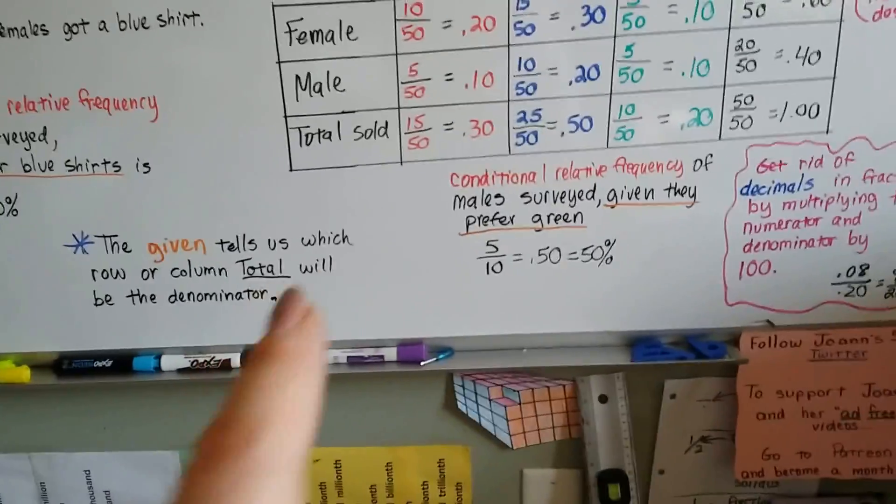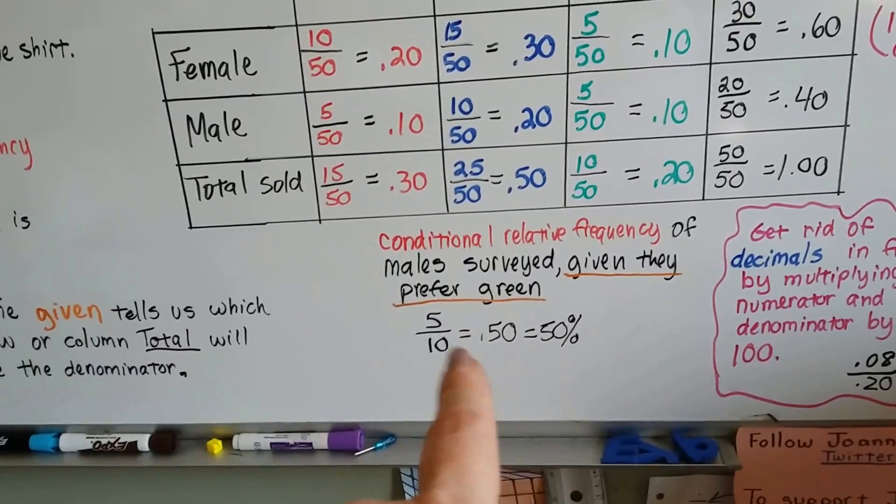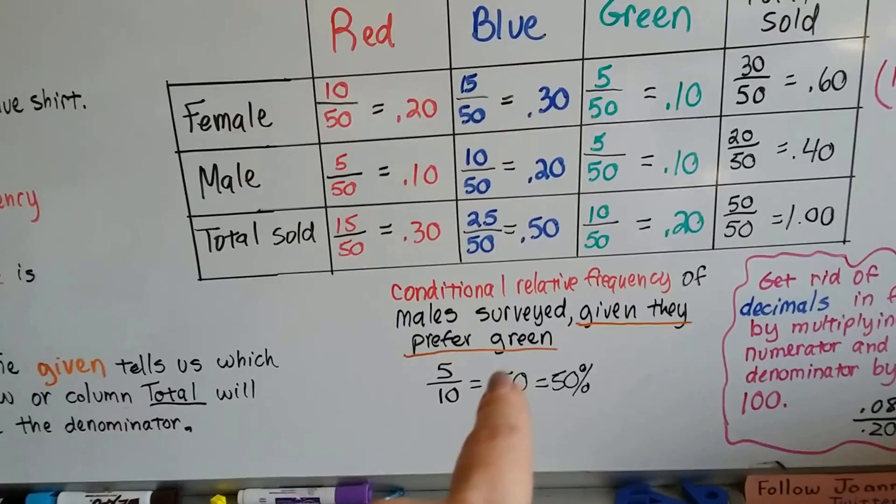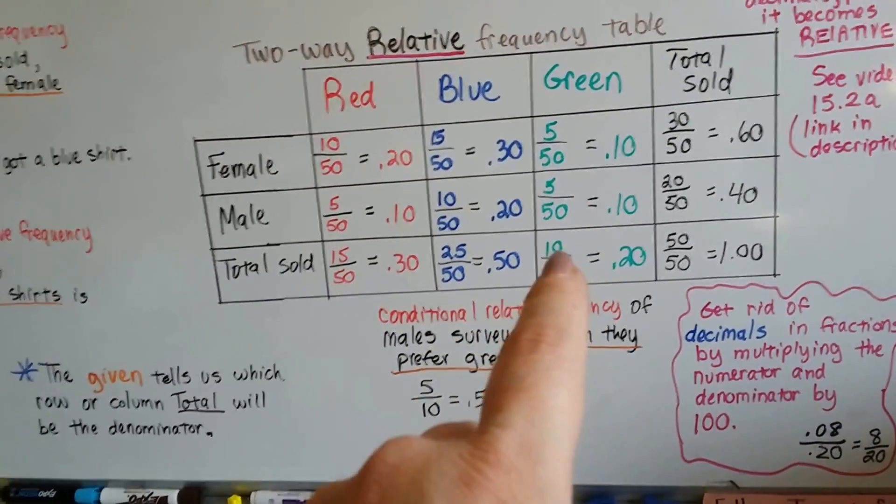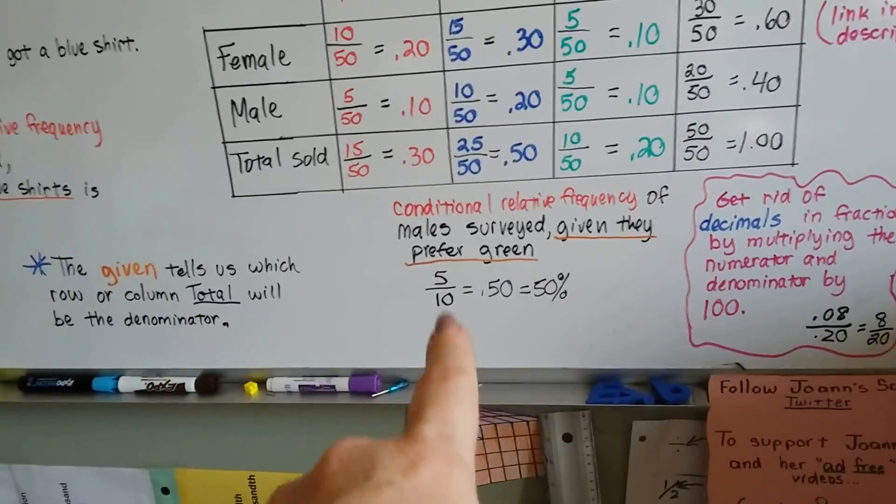So what if it was conditional relative frequency of males surveyed given they prefer green? So the given is green. That's going to be our denominator total. So what's the green total? Well, it would be 10. That's the green total. So that's going to be our denominator.